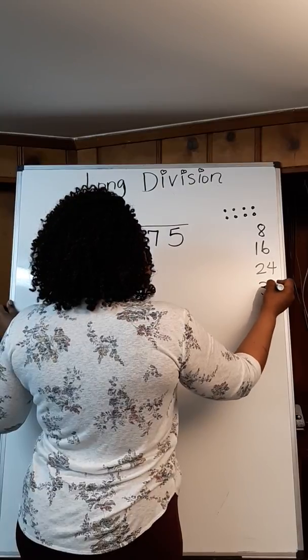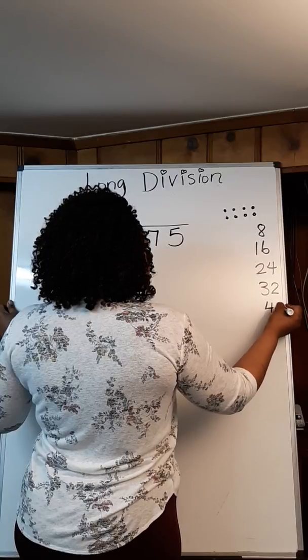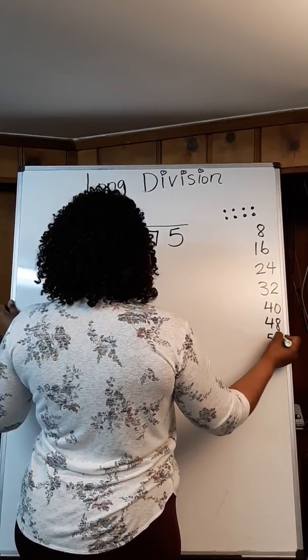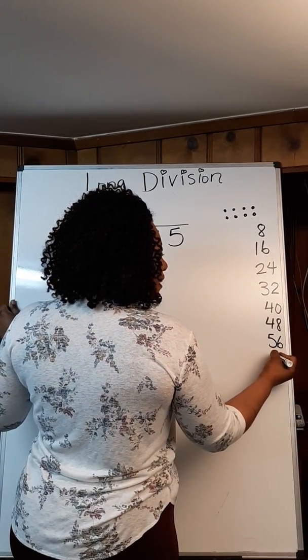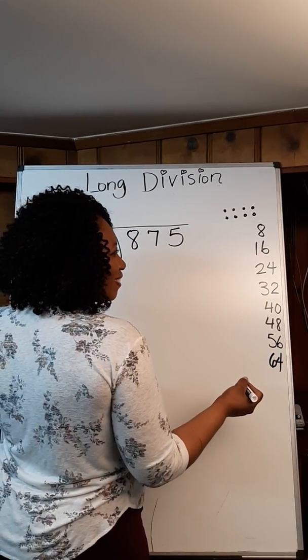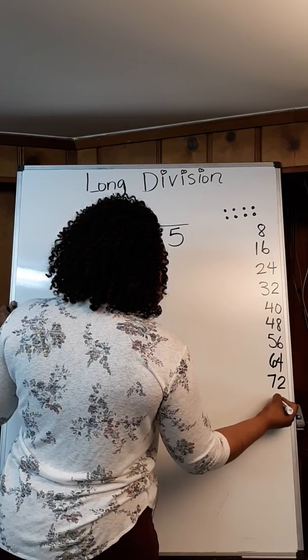So the next number 32 plus 8 is 40, 48, 56, and the next number is 64, then 72, and the last number is 80.